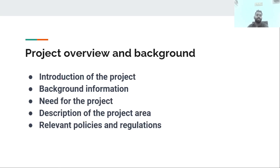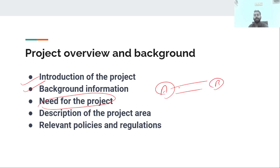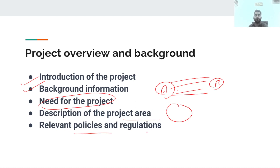For the introduction of the project, we need to provide background information and explain the need for the project. For example, for a highway between city A and city B, you have to do a traffic analysis and survey. If traffic exceeds the limit, then we have to prove the need. We also need to provide a description of the project area — if it is between two cities or a particular area, give a full description. Additionally, we need to reference all relevant policies, regulations, guidelines, and codal provisions.